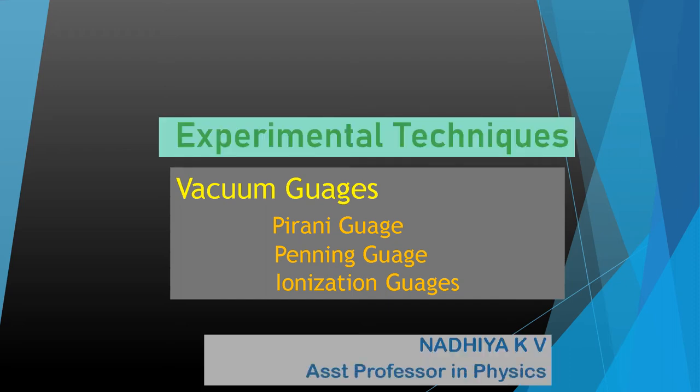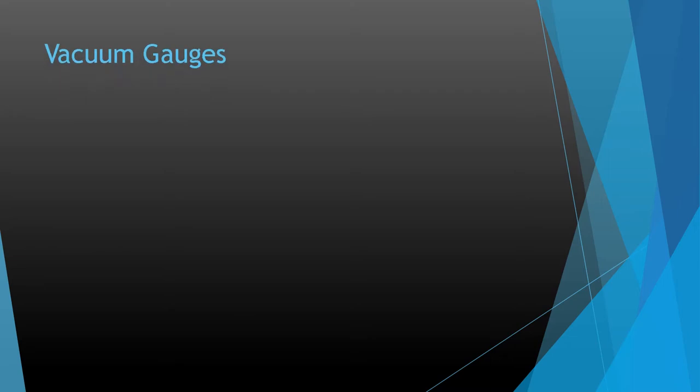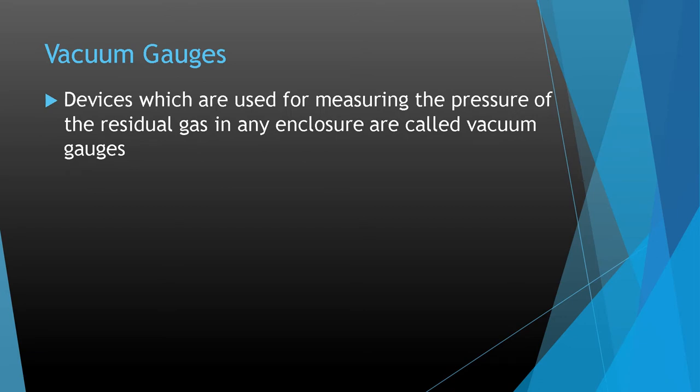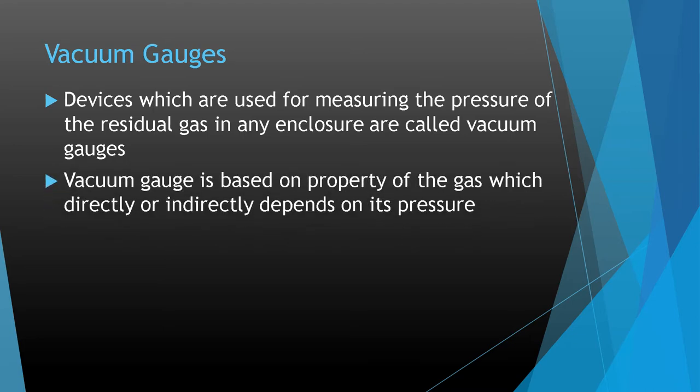Experimental Techniques. We have discussed the different types of vacuum pumps. Today onwards we will discuss vacuum gauges. The devices used for measuring the pressure of the residual gas in any enclosure are called vacuum gauges. The vacuum gauge is based on a property of the gas which directly or indirectly depends on its pressure.